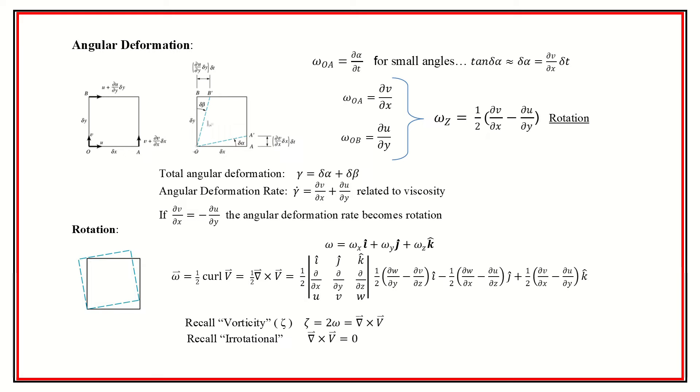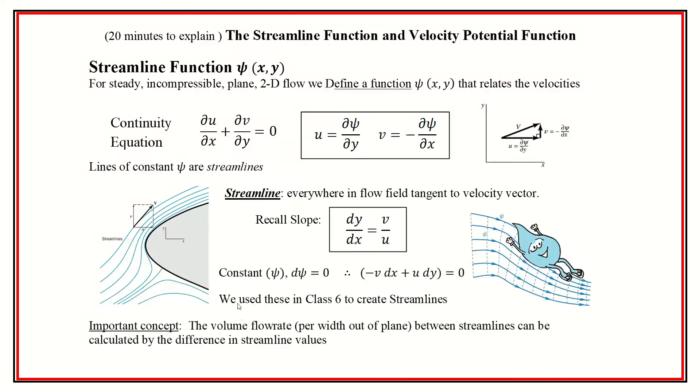And that's where it comes from, right, from this deformation of this element. And we can even look at an angular deformation rate, which is related to viscosity. And if the, you could, notably, if these two are, if one is the negative of the other, the deformation becomes rotation, right. And that rotation can also be described with the curl. The rotation is one half the curl of V. And so based on that idea of curl, we define this thing called vorticity, which is actually two times the rotation, angular rotational speed. And if that vorticity equation is equal to zero, we dub that irrotational.